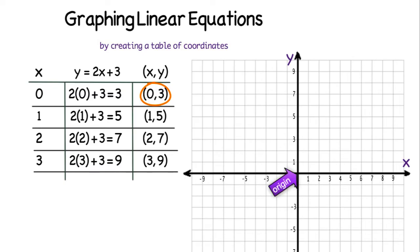So the first coordinate I have is 0, 3. I always start at the origin which is at 0, 0, and I'm going to go over 0 and up 3 and put a dot at 0, 3.